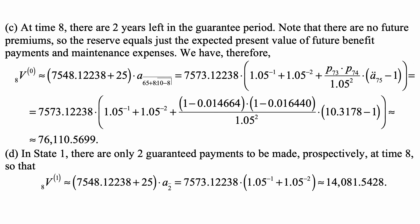Part C: At time 8, there are 2 years left in the guarantee period. Note that there are no future premiums, so the reserve equals just the expected present value of future benefit payments and maintenance expenses. Therefore, 8V0 equals (7548.12238 + 25) × a̅73:⌉̅2.